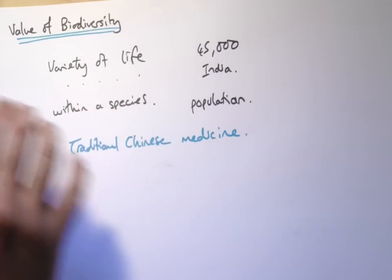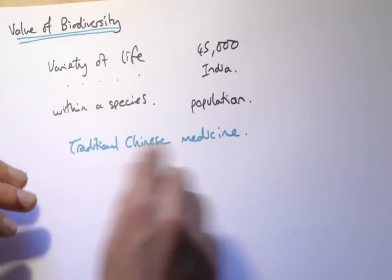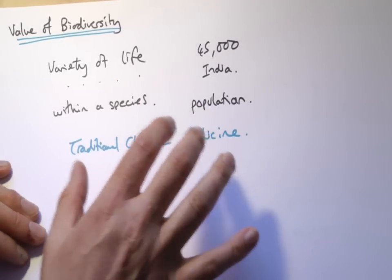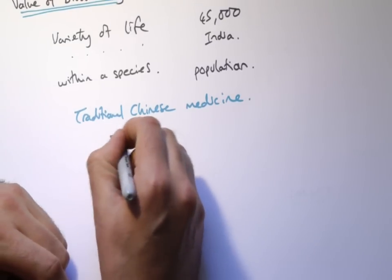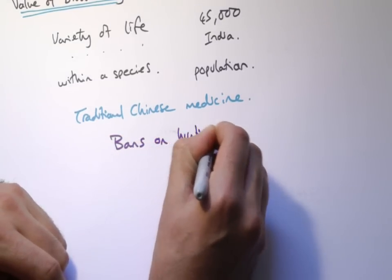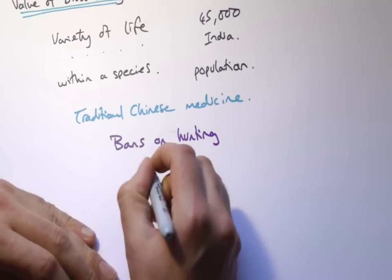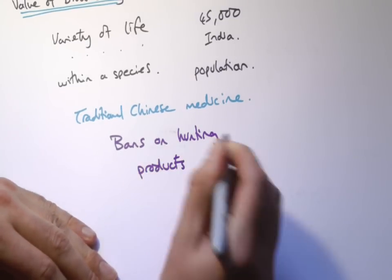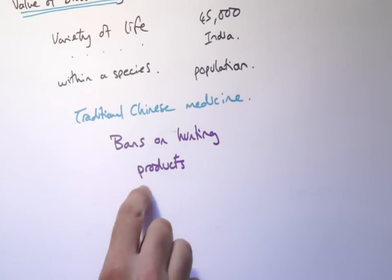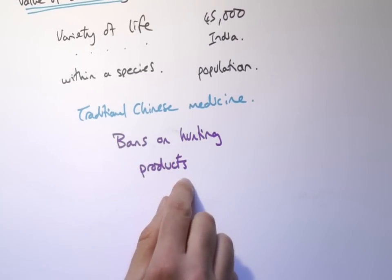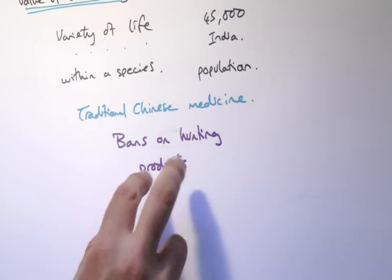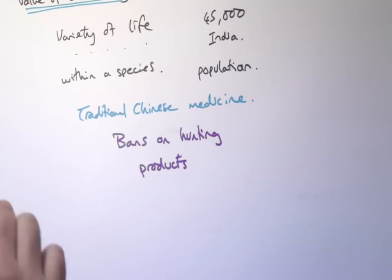The problem is that the numbers of these animals have gone down so low. So what's happened is people have brought in bans on hunting, and probably a more effective way is to ban any products that contain those things. Something similar has been done with elephants — you ban ivory, and if you couldn't sell or buy ivory there would be little point in hunting and poaching for it. Rhino horn is another product used in traditional Chinese medicine.